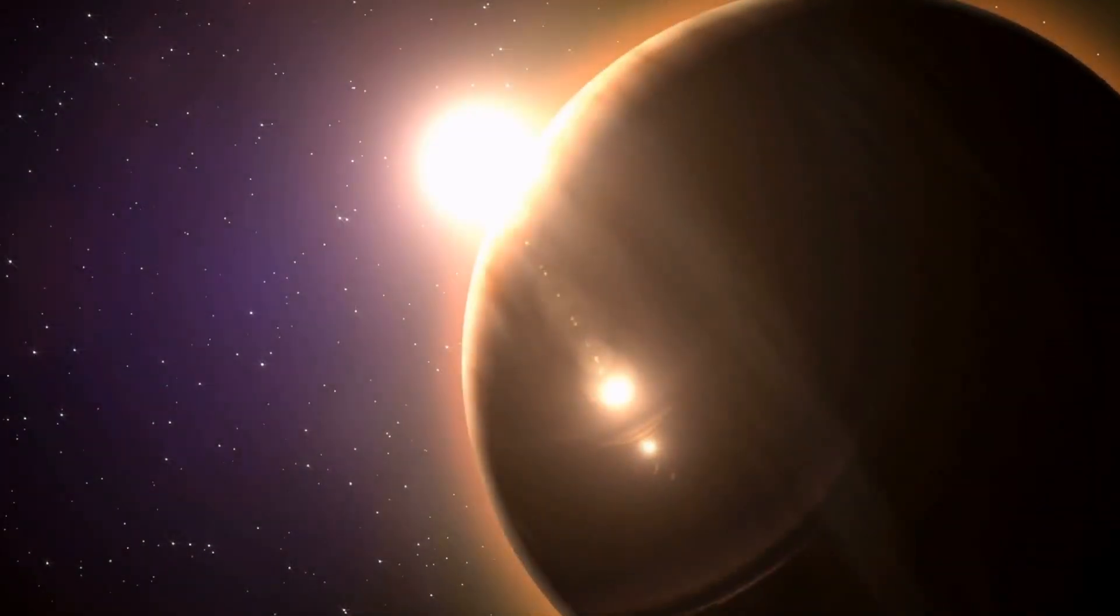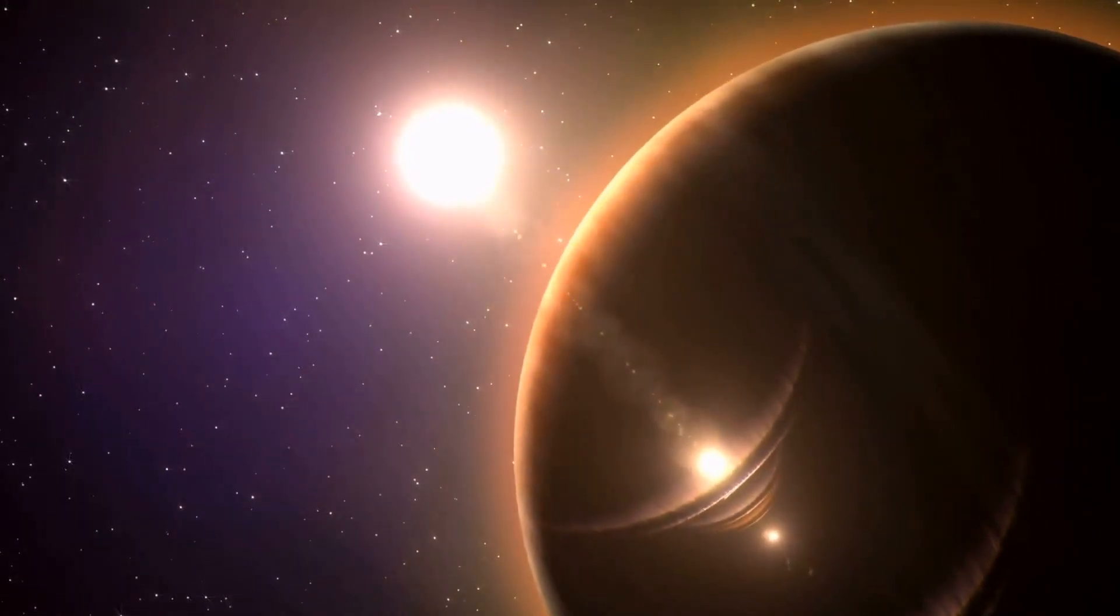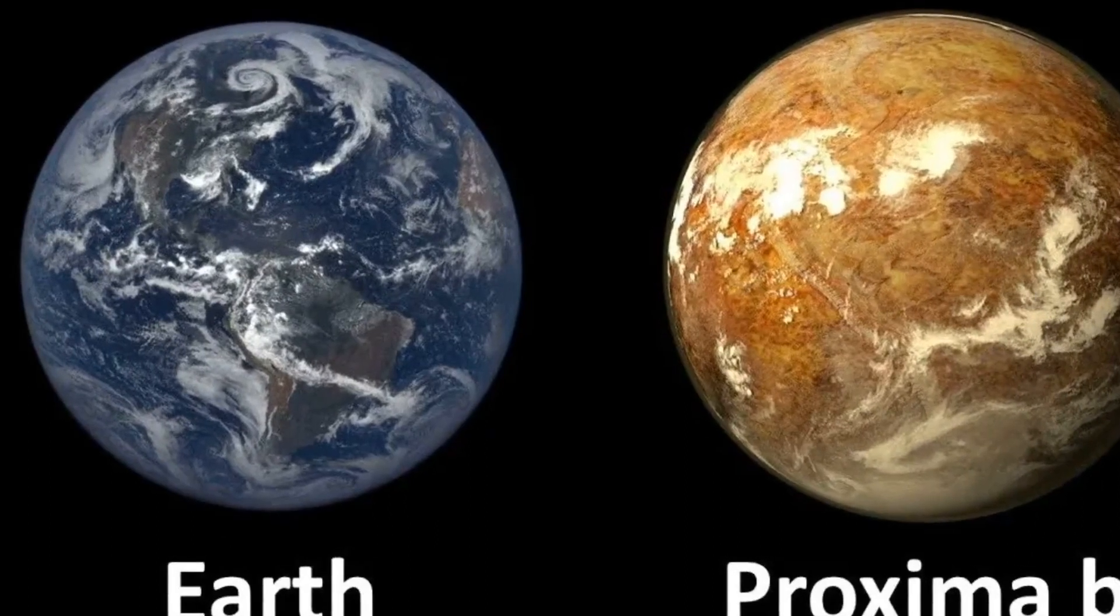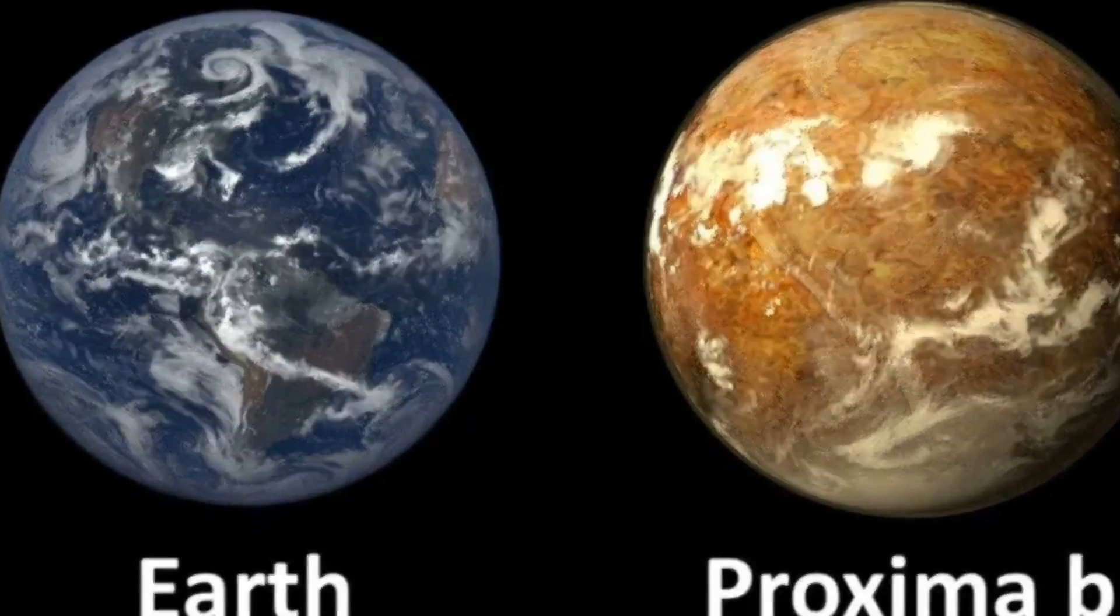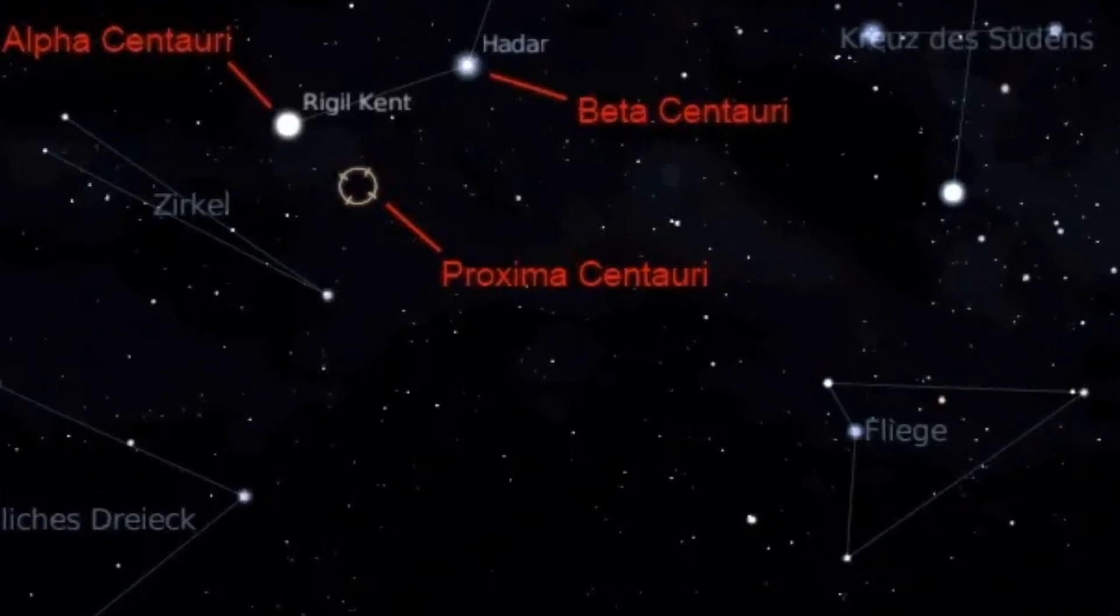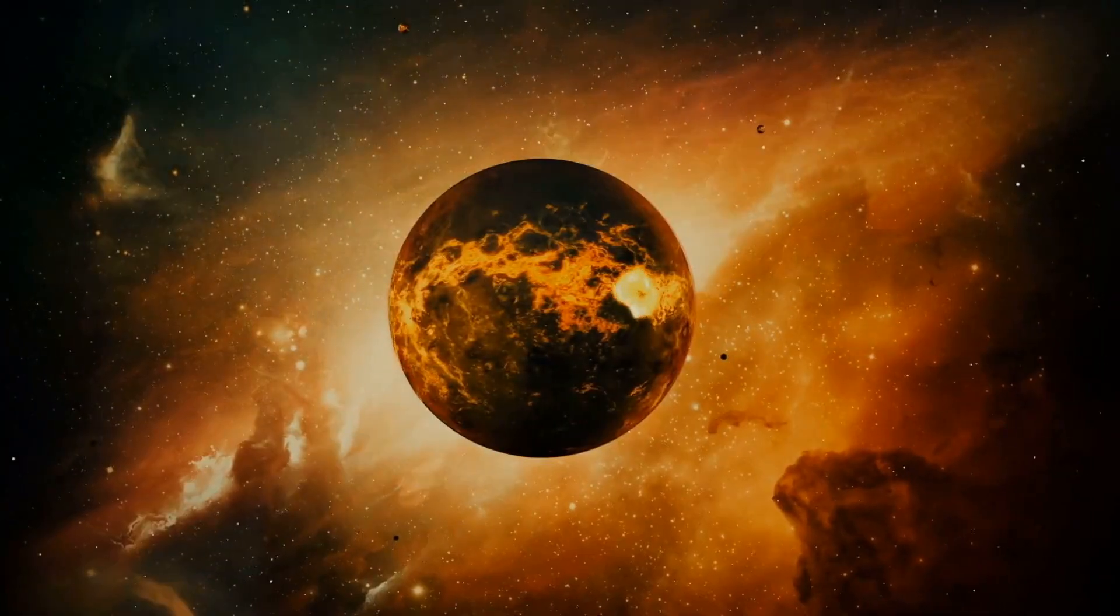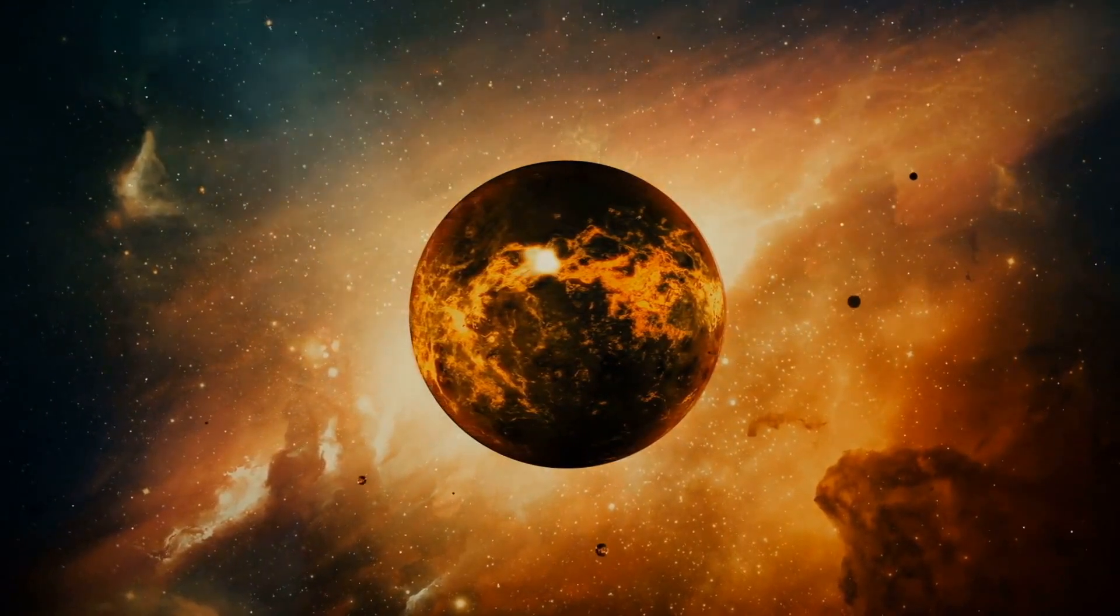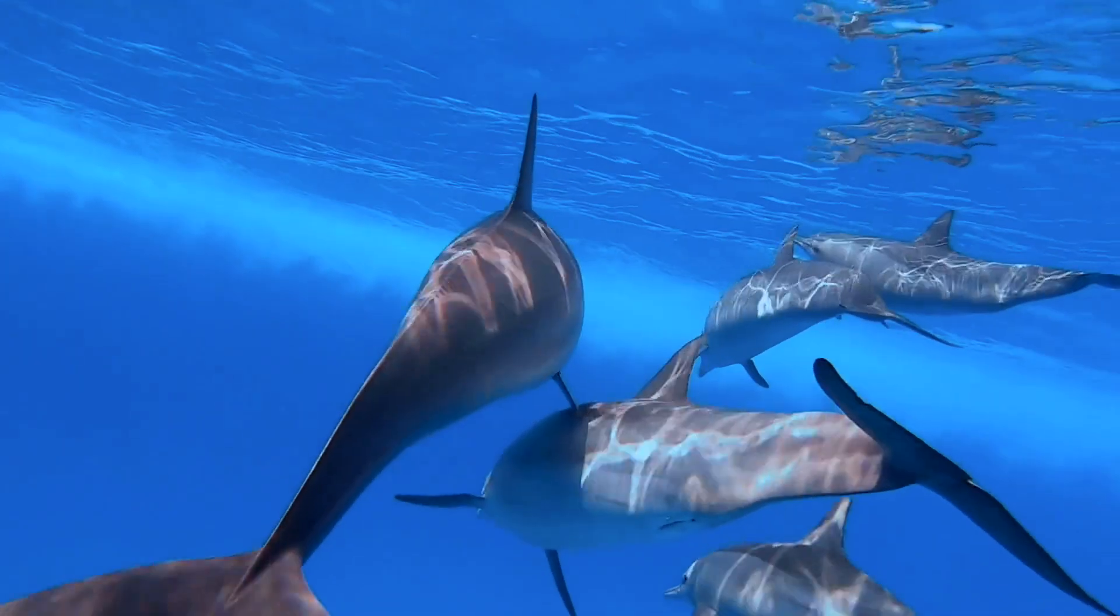Out there in the vast expanse of space lies a mysterious planet that transcends the ordinary space rocks we often encounter. This celestial wonder is none other than Earth's distant cousin, Proxima Centauri b, a mere 4.2 light-years away from our home. Positioned comfortably within the habitable zone of its star, Proxima Centauri b exudes an air of mystery and fascination. The question that captivates the minds of astronomers and space enthusiasts alike is whether this enigmatic planet harbors similarities to our Earth, boasting oceans and teeming with life on its surface.